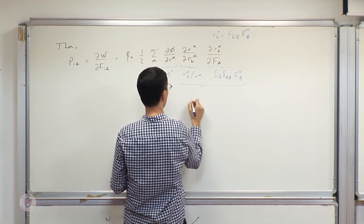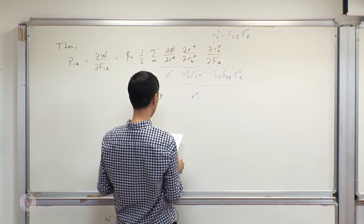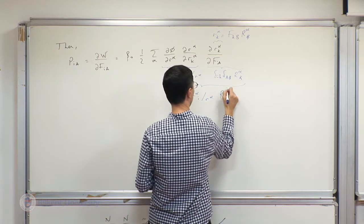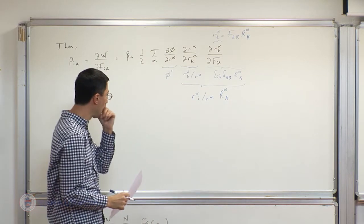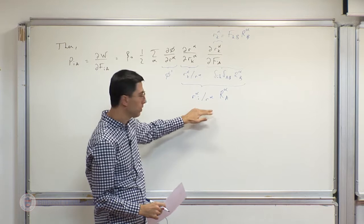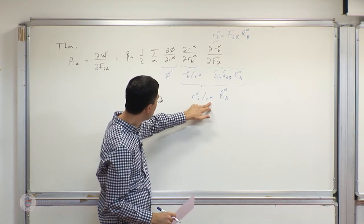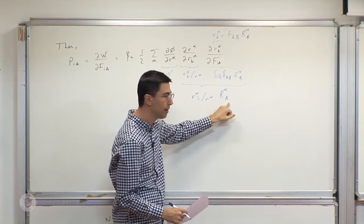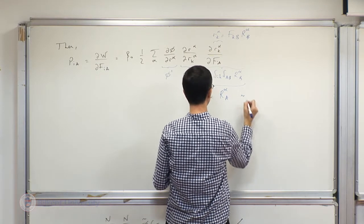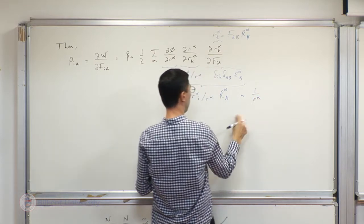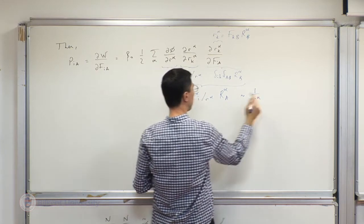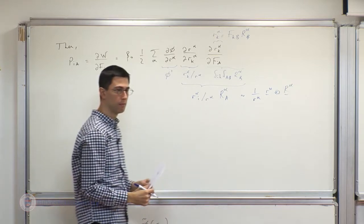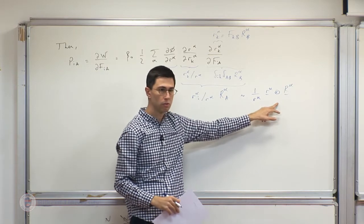The result is r_alpha_I over r_alpha times capital R_alpha_A. These are the components of a two-point tensor with indices I and A, corresponding to 1/r_alpha times the vector r_alpha tensor-producted with vector capital R_alpha. Combining everything with phi-prime gives the first Piola-Kirchhoff stress tensor.